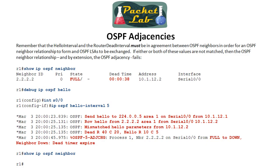These two timers must be agreed upon by all neighbors; otherwise the neighbor relationship will fail. If the neighbor relationship fails, you will never get an adjacency and will never get routes from those neighbors. If you change these timers, make sure you put thought into it and change them on all neighbors, otherwise you will end up with neighbors in a down state.